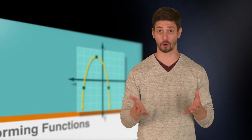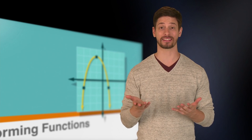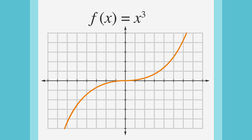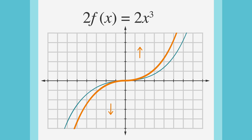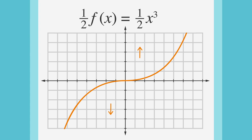What about stretching or shrinking the graph vertically? Algebraically, multiplying the whole function by a number bigger than 1 will have the effect of stretching the function vertically. For example, if we multiplied this entire function by 2, we'd get 2x cubed. And multiplying the function by a number between 0 and 1 will have the effect of shrinking the function vertically. In our example, multiplying this function by 1 half will result in 1 half x cubed.